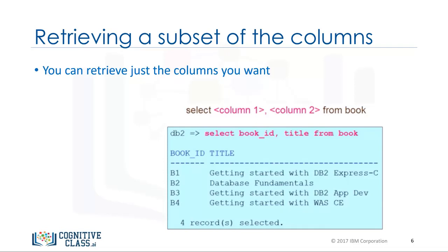If you want, you can retrieve just two columns from the table book, for example, book underscore ID and title. In this case, the SELECT statement is SELECT book underscore ID, title from book.